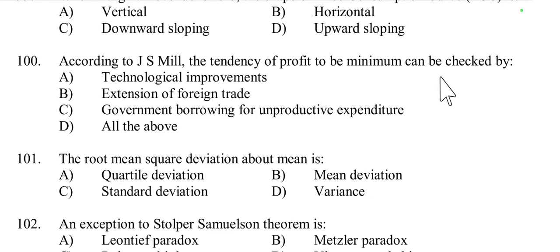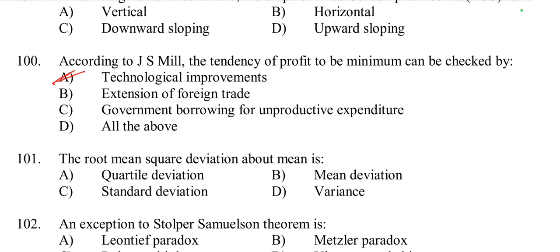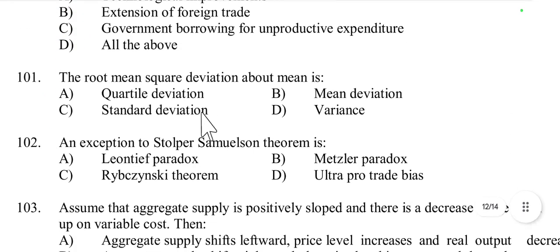Question number 100: According to J.S. Mill, the tendency of profit to be at a minimum can be checked by technological improvement, extension of foreign trade, and government borrowing and unproductive expenditure. Technological improvements increase productivity and efficiency leading to higher profits; expanding markets through foreign trade increases demand; and government spending can influence economic activity. All of the above are true.